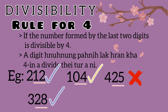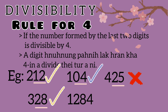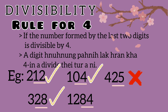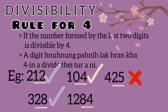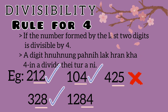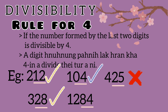Example: 1284. The last 2 digits are 8 and 4 — that is 84. Is 84 divisible by 4? 4 times 2 equals 8, and 4 times 1 equals 4 — 21 times 4 equals 84. So 1284 is divisible by 4. The last 2 digits are divisible by 4, so the whole number is divisible by 4.